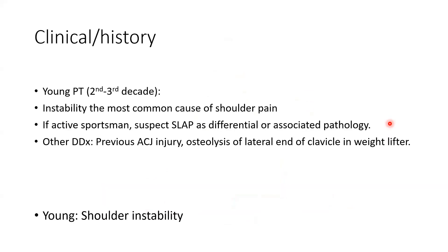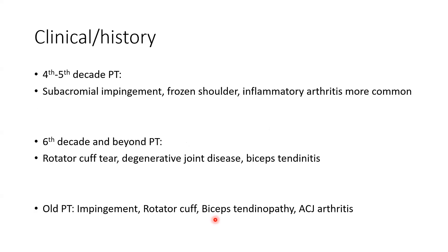For clinical history, age is very important. Young patients in the second to third decade of life — instability is the most common cause of shoulder pain. If an active sportsman, suspect SLAP as a differential diagnosis and other associated pathologies. Other differentials for this age group include ACJ injury and osteolysis of the lateral end of clavicle in a weight lifter. For the fourth and fifth decade, subacromial impingement, frozen shoulder, and inflammatory arthritis are more common. More than 60 years: rotator cuff tear, degenerative joint disease, and biceps tendonitis.